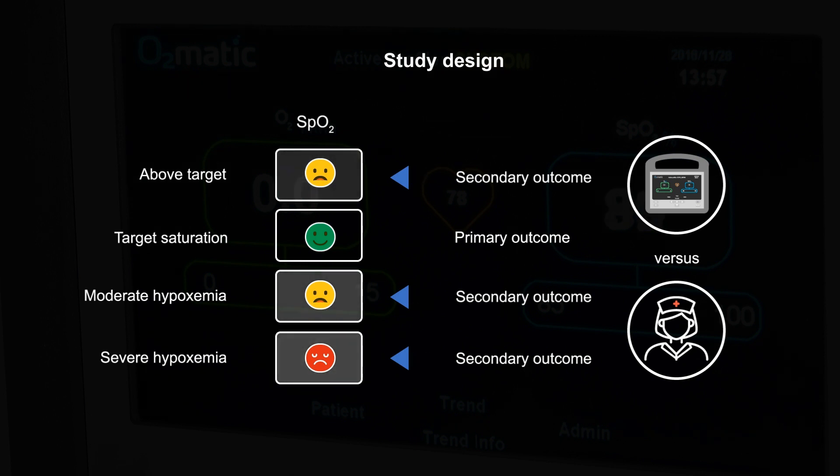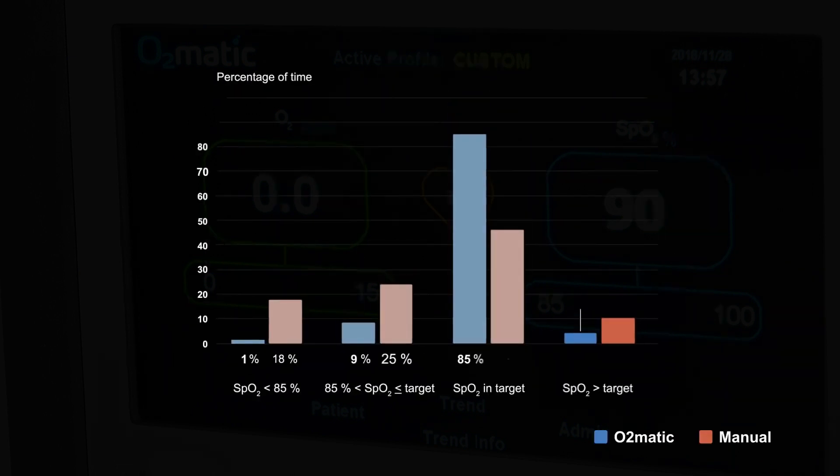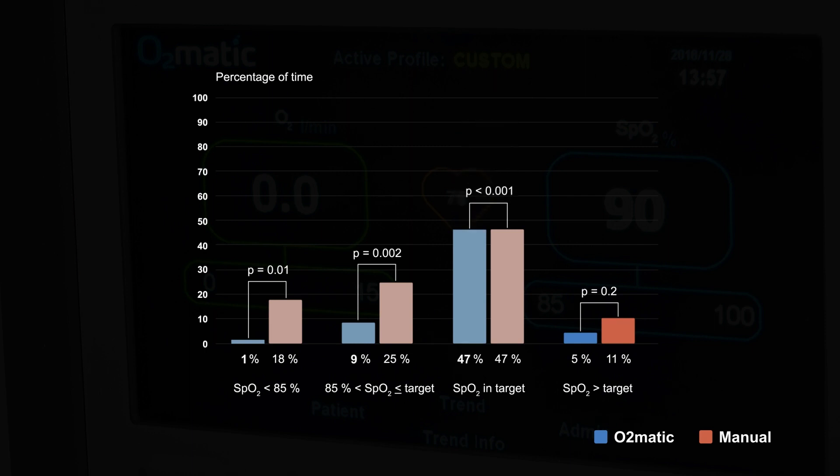Furthermore, we examined patients' perception of automatic oxygen control. The results of the study was that O-matic maintained the oxygen saturation in the prescribed interval 85 percent of the time and manual control only kept the saturation in the right interval for 47 percent of the time.